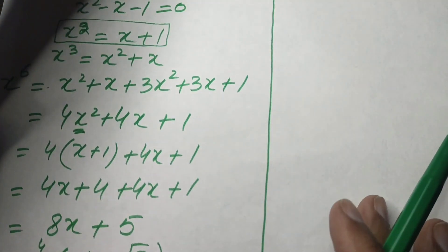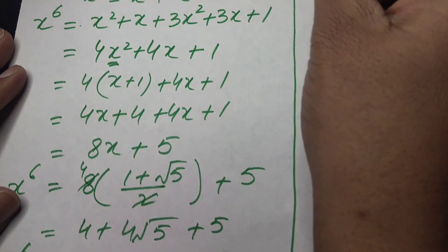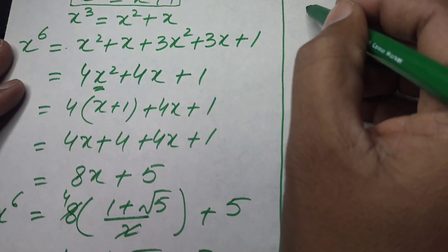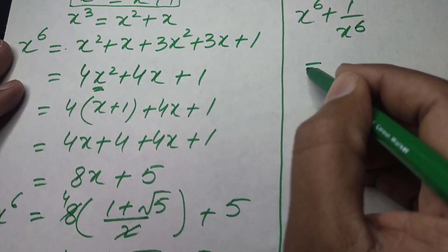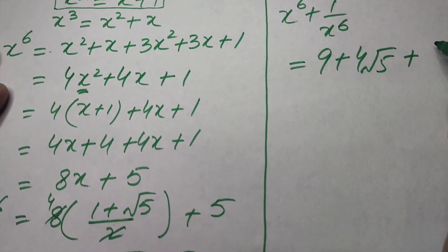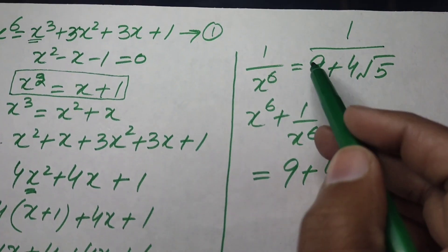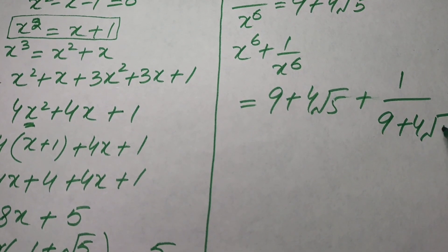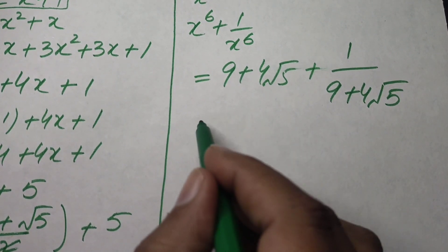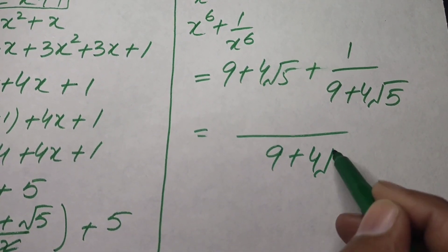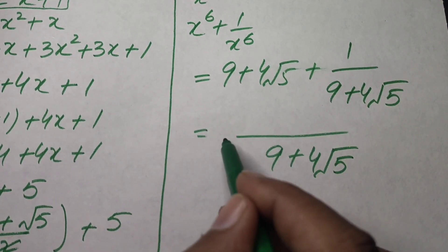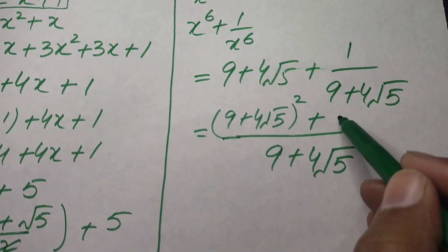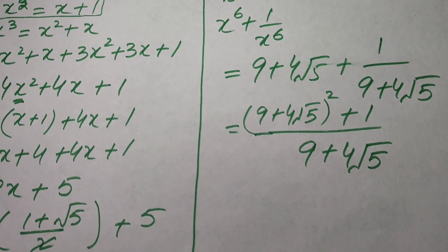Our goal is to find x⁶ + 1/x⁶. We have x⁶ = 9 + 4√5, so 1/x⁶ = 1/(9 + 4√5). Adding both terms, x⁶ + 1/x⁶ = (9 + 4√5) + 1/(9 + 4√5). Taking the common denominator, we get (9 + 4√5)² + 1 as our final answer. Thank you so much for watching this video.